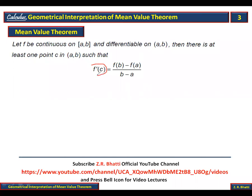The left-hand side, f'(C), is the slope of the tangent at point C. The right-hand side — if you look at any line, the slope is y2 minus y1 over x2 minus x1. Now we see that these are two points: (a, f(a)) and (b, f(b)). You can see that the right-hand side is the slope of the line joining these two points.